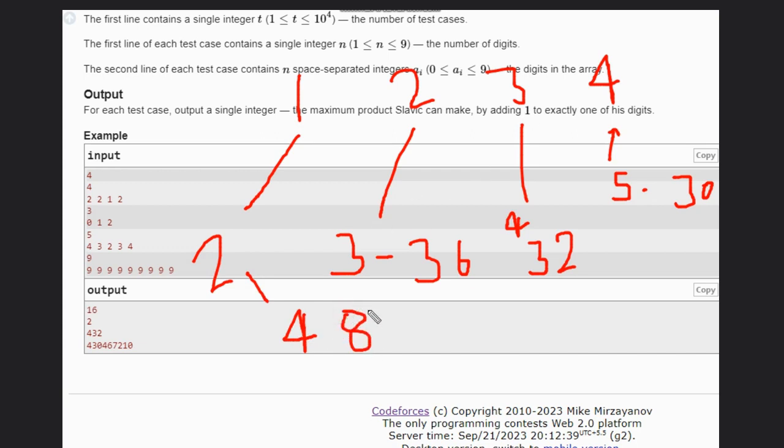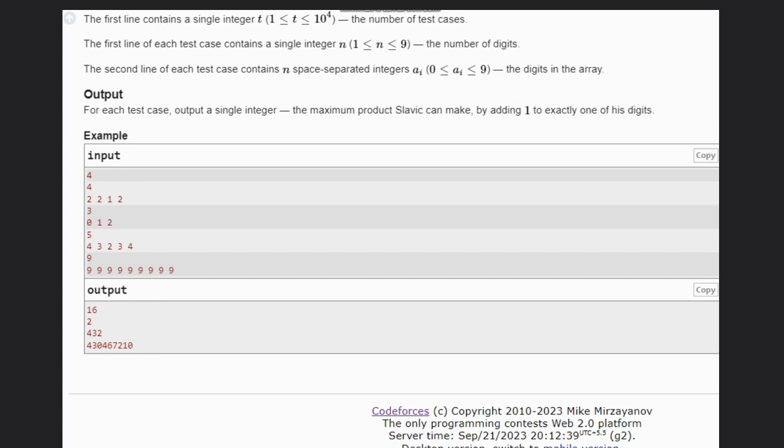Okay, so you can see as we are going down and decreasing, going to the least positive digit, the product is increasing. Why is it happening? So let's consider a simple case.